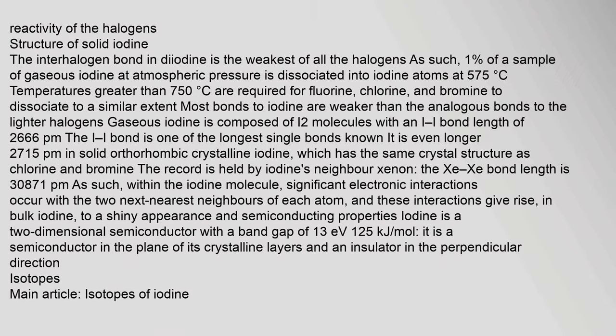The interhalogen bond in diiodine is the weakest of all the halogens. As such, 1% of a sample of gaseous iodine at atmospheric pressure is dissociated into iodine atoms at 575°C.